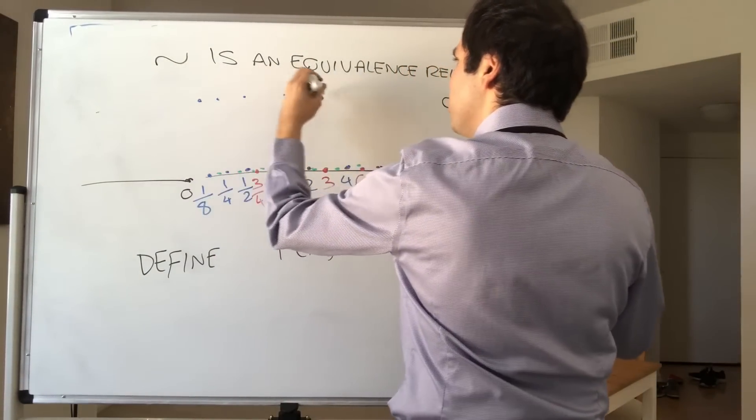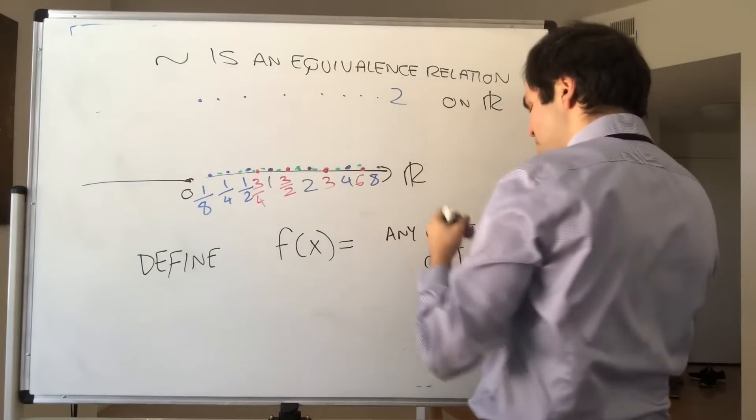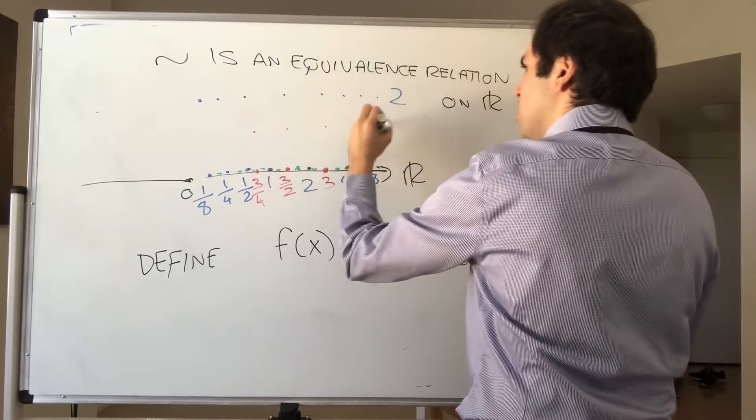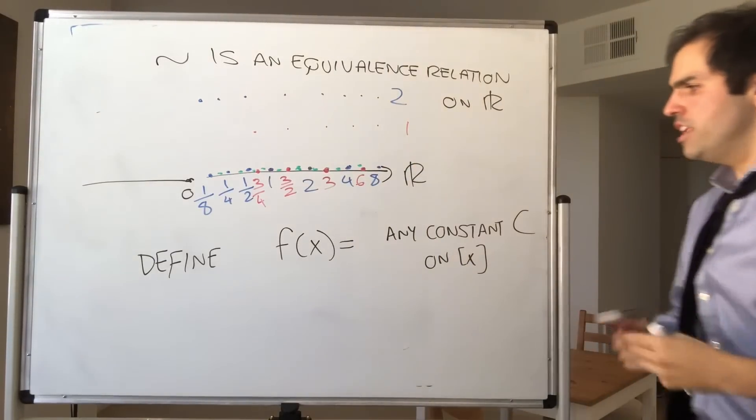And then, as long as the constant doesn't depend on the members of your class, you actually get a function. For instance, on this blue class, let c be 2, and then on this red class, you can let c be 1.